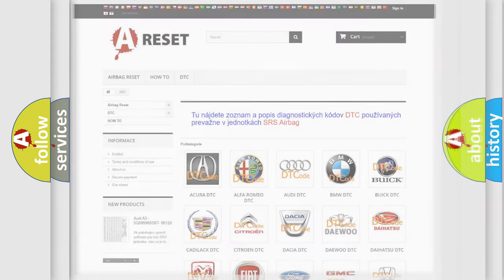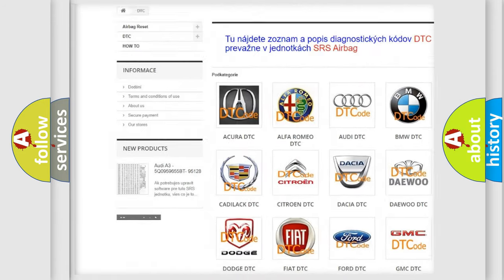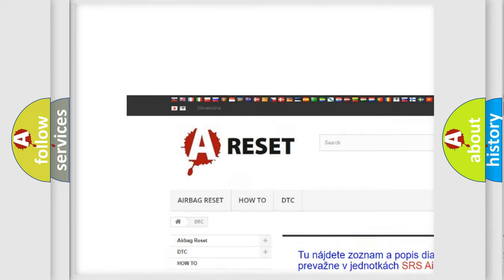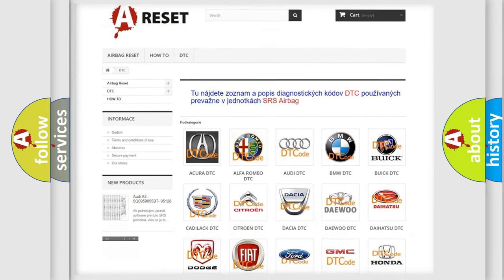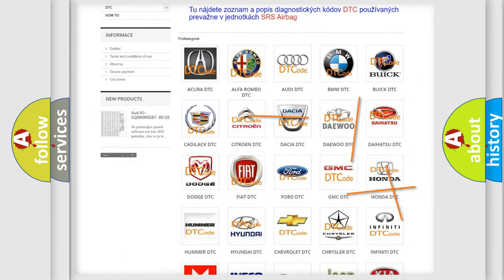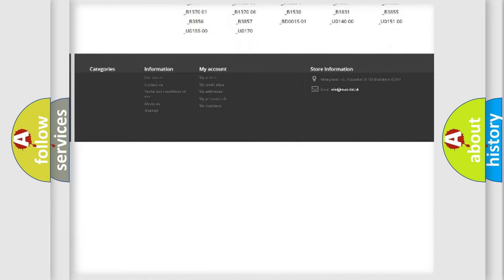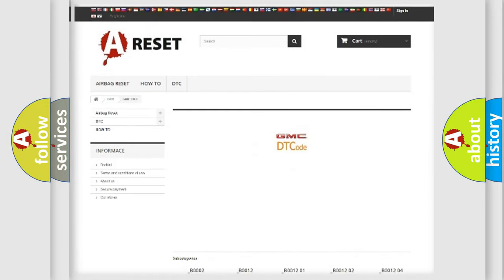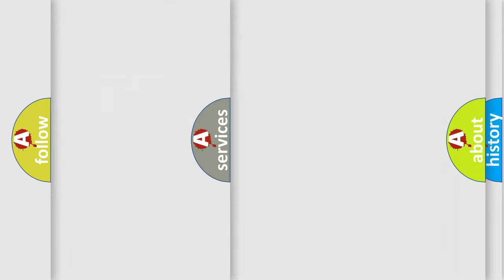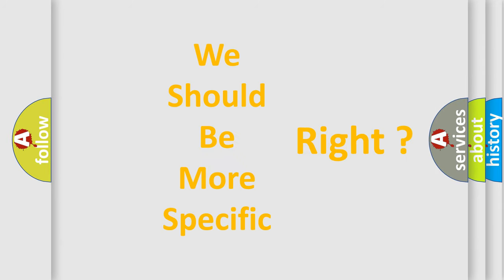Our website airbagreset.sk produces useful videos for you. You do not have to go through the OBD2 protocol anymore to know how to troubleshoot any car breakdown. You will find all the diagnostic codes that can be diagnosed in GMC vehicles and many other useful things. The following demonstration will help you look into the world of software for car control units.